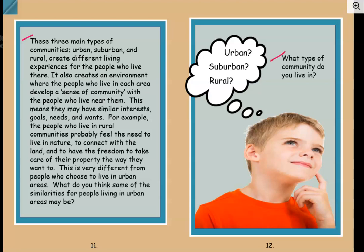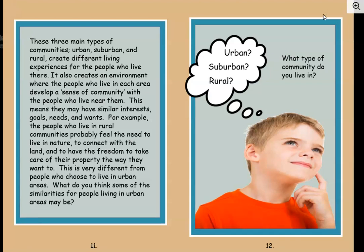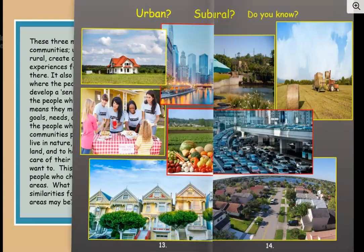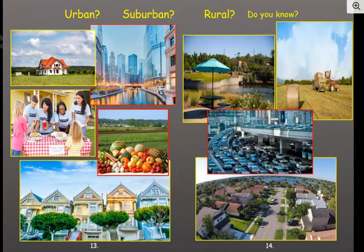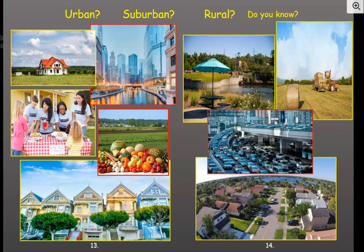What type of community do you live in? Have you figured it out yet? I bet you have. So we're going to play a little game: urban, suburban, or rural — do you know? Let's look at this first picture. It's a picture of a house. I see a lot of trees behind the house and a lot of green space in front. I don't see any other homes around it, no vehicles, and no sidewalks. I think that's rural.